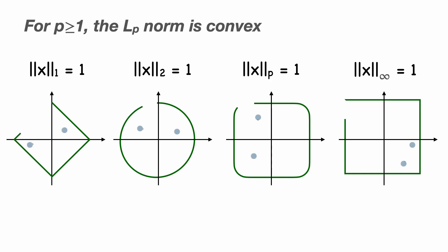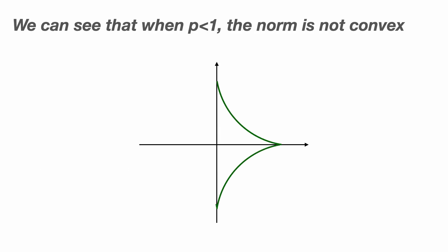We can now appreciate an important point of this diagram is to show that the LP norm is convex for P greater than or equal to 1 since any two points within the interior of any of them will be connected by a straight line also within the interior. We can also see that for P less than 1, such as our earlier example of P equals a half, the norm is not convex.